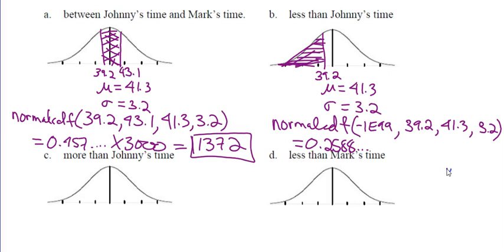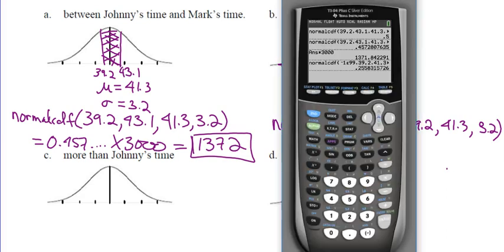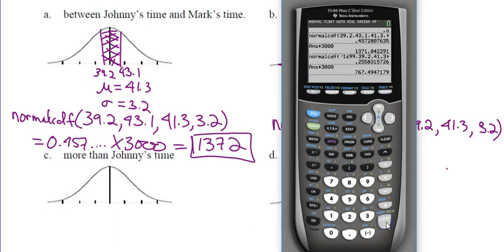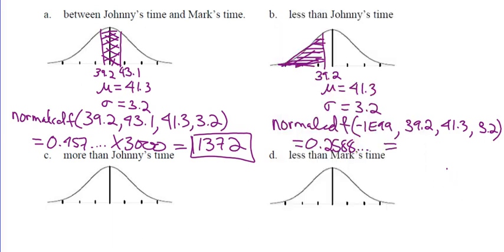It's math, not science — we don't round until the final answer. There are 3,000 men, so we go times 3,000: that brings down ANS, the last number, times 3,000. We get 767.49. Now, do we go to 767 or 768? We'll go to 768 — because if I have more than 767, we'll call it 768. Normal CDF gives me this number, which I multiply by 3,000, getting 768.